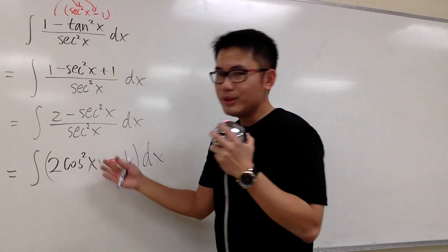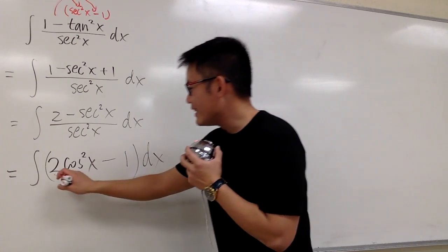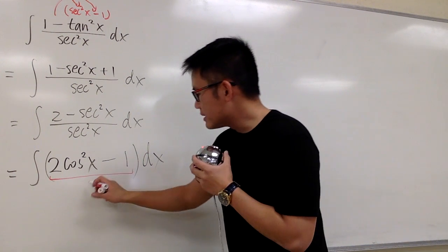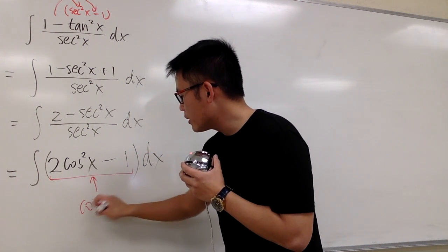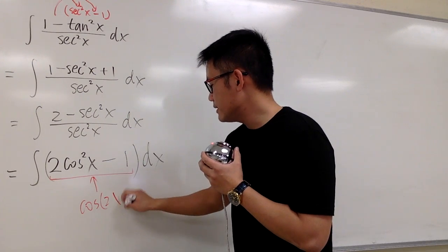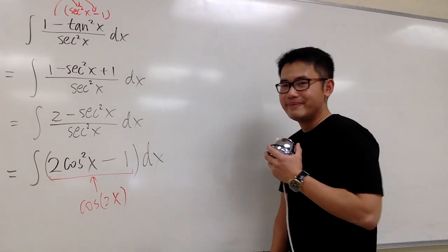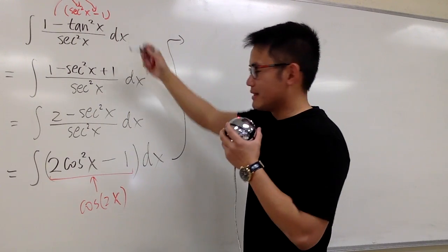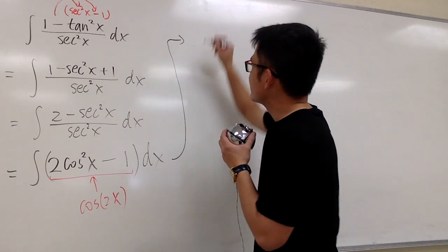Well, I don't know how to integrate this at all, but I know that we have an equivalent identity. All this is the same as the double angle cosine, cosine 2x. This is just the same as cosine 2x. So here, this integral, it's the same as just asking us, what's the integral of cosine 2x?